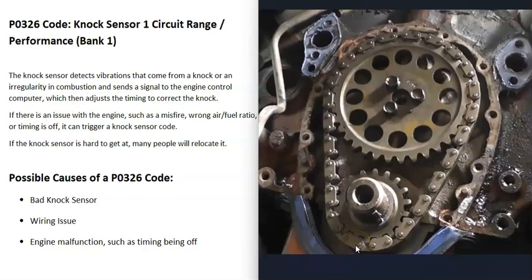One thing to note is that if there's an issue with the engine, like the timing being off and causing the engine to knock, that can throw a knock sensor code, but the sensor isn't the problem. For example, an old stretched timing chain can throw the timing off, causing knocking or pinging in the engine. The knock sensor picks this up and throws a code while the computer tries to adjust the timing.